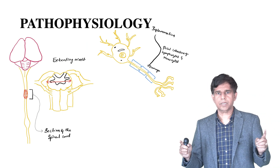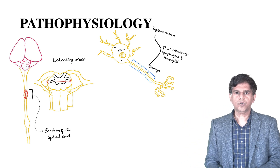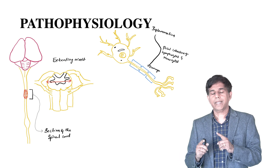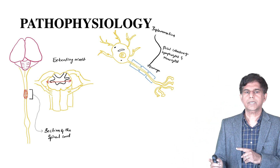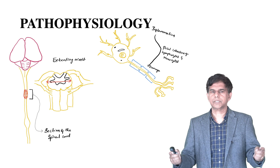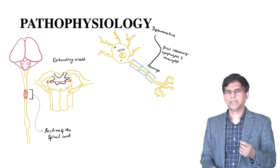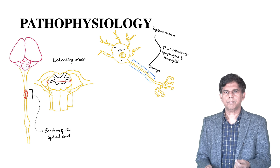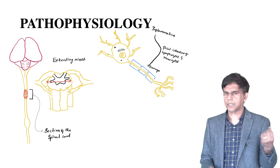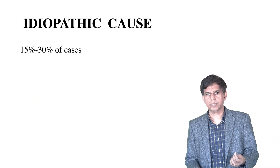Looking at the pathophysiology: there is inflammation occurring, with a focal collection of lymphocytes and monocytes, causing damage to the myelin sheath, which then produces the symptoms of transverse myelitis. In some cases there is an immunological component, but mainly this inflammatory process is what causes the symptoms.